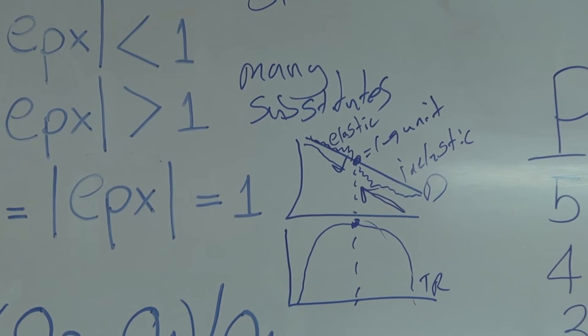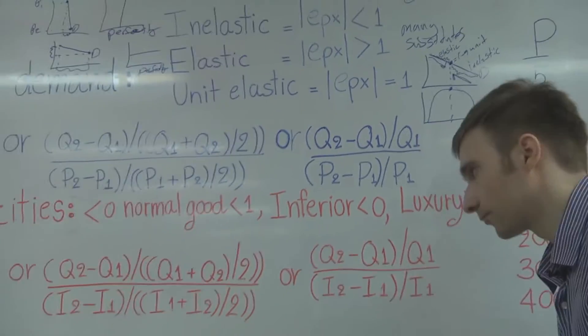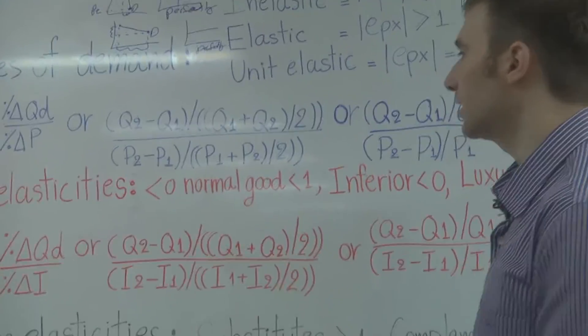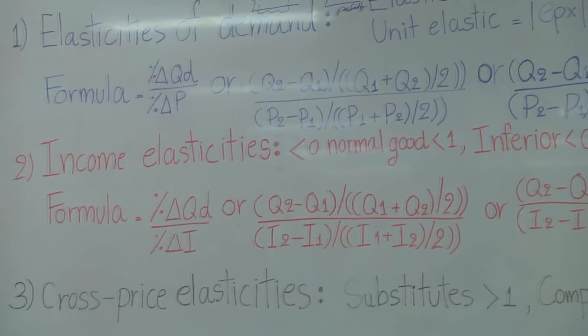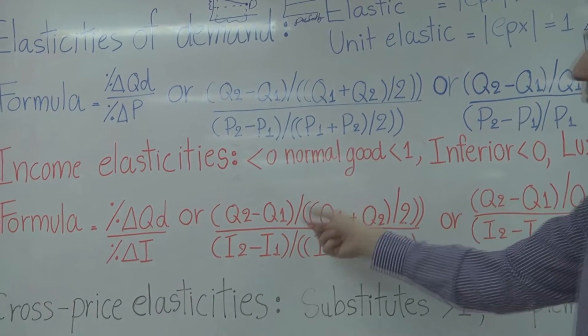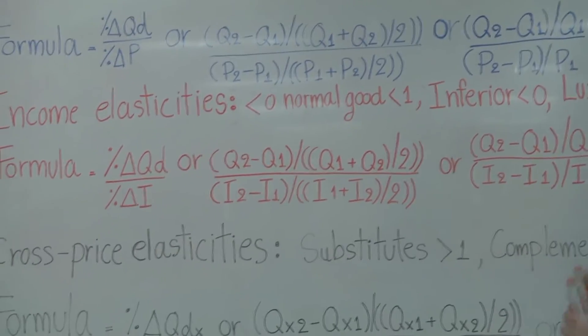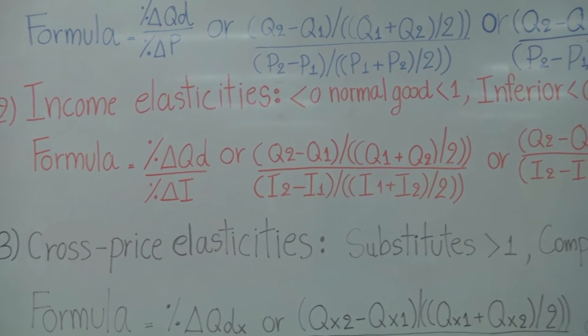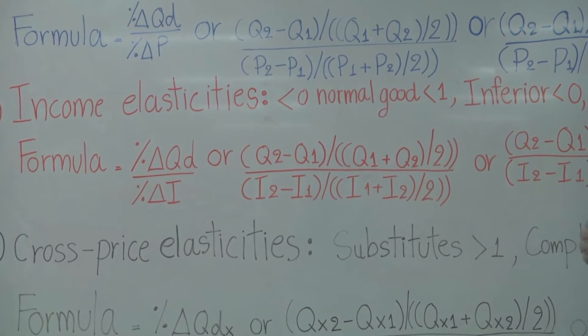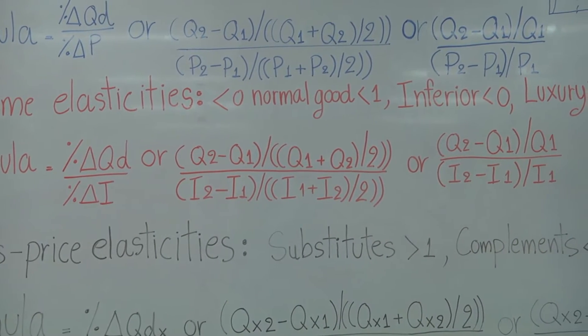We'll now talk about income elasticity. So income elasticity is going to look at the same formula as elasticity demand, except for my P's are now I's for income. So we're looking at how different income levels change, how that affects the quantity demanded. So the formulas are the same there.